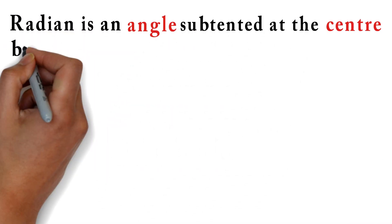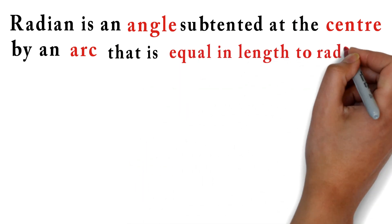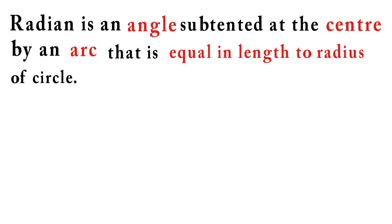Radian is an angle subtended at the center by an arc that is equal in length to radius of circle. Let me illustrate this with the help of a figure.